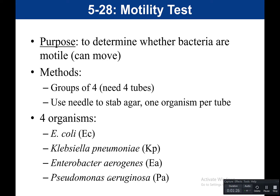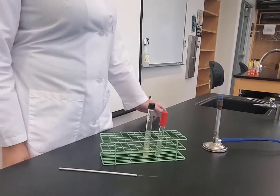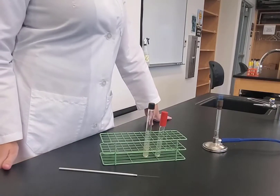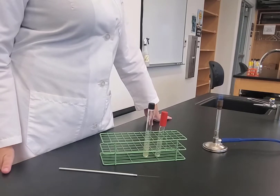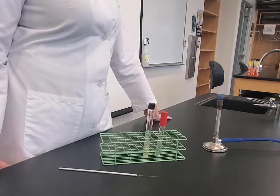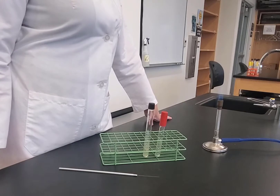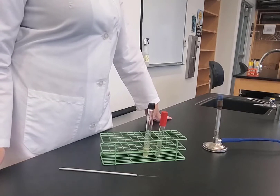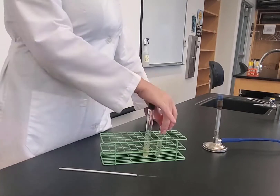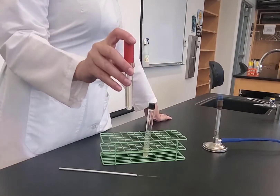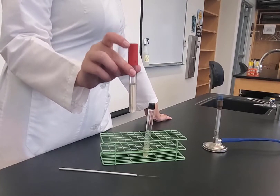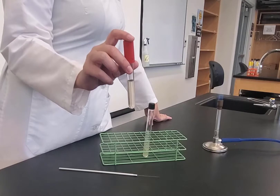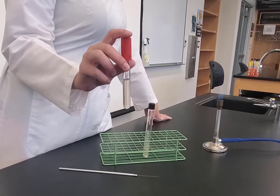Now we have a video demonstrating how to set up this test. In this experiment, we are going to do a motility test, and the purpose of this test is to determine if bacteria are motile, meaning can they move. When we do this setup, we would actually have four of these motility broths — there are four organisms that we will test. However, for the sake of demonstration, I'm only going to demonstrate one.